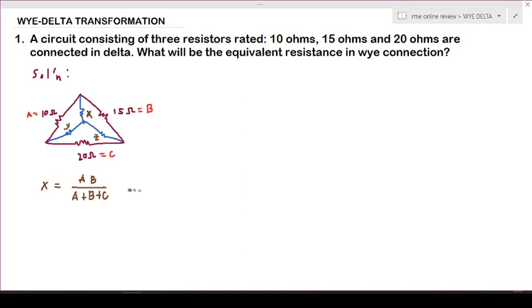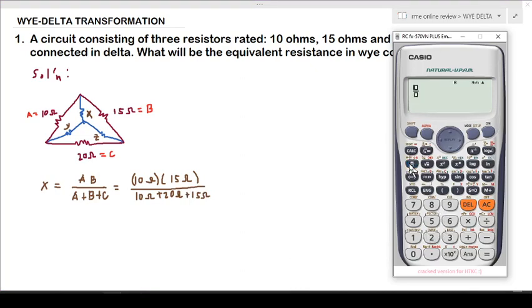We substitute the given values: A is 10 ohms, B is 15 ohms, all over 10 ohms plus 20 ohms plus 15 ohms. Using our calculator: 10 times 15 over 10 plus 20 plus 15.